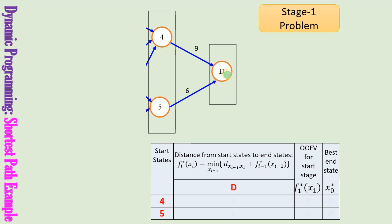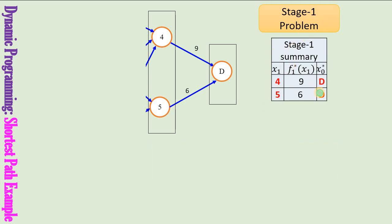If you make a decision to go from node 4 to D, the objective function value is 9 units. Similarly, if you go from node 5 to D, the shortest path is 6 units. In the best-value column, starting from 4 the best end state is node D, and starting from 5 the best end state is D as well. This table represents the stage 1 summary.